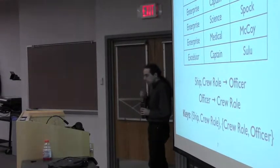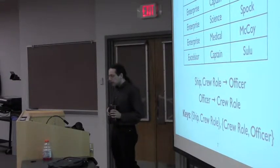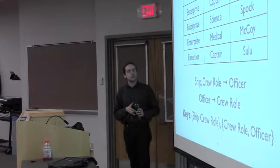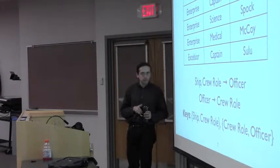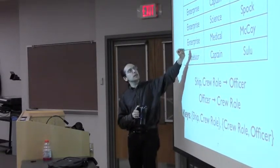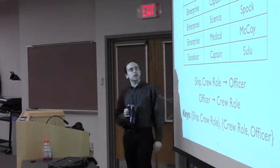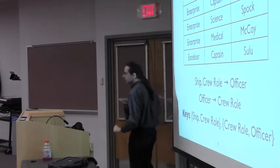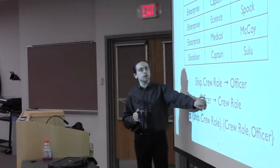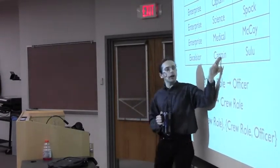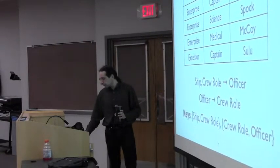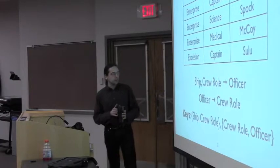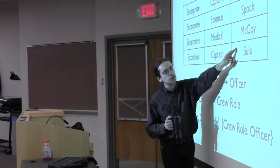Something we're going to talk about today is the notion that you can't always decompose into Boyce-Codd Normal Form. For example, consider a table of ship, crew role, and officer's name. For a particular ship and role, there's exactly one officer filling that role. And for any given officer on a ship, that officer fills exactly one role. There are two different keys: given ship and crew role we can always infer the officer, and given officer and ship, we can infer the crew role.